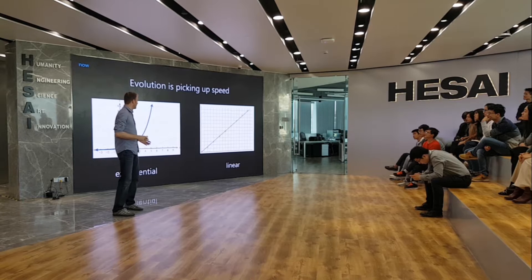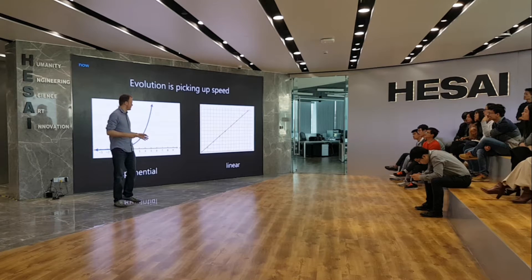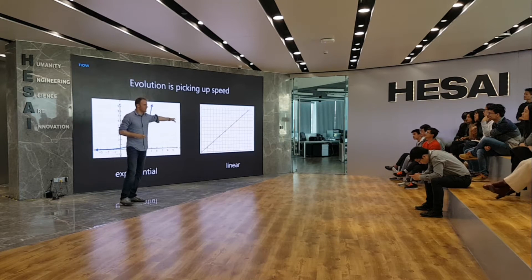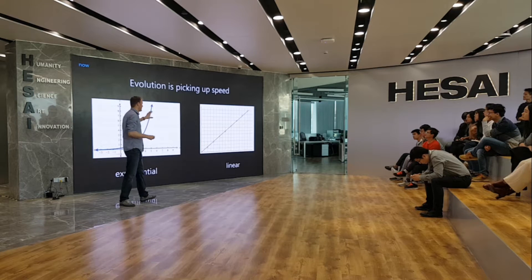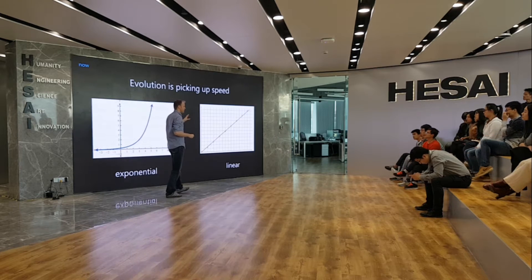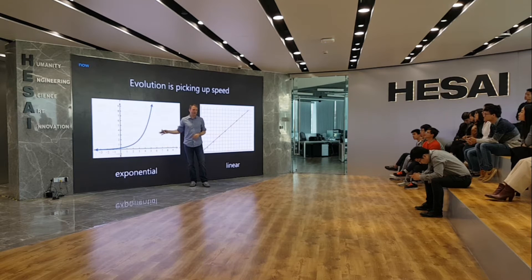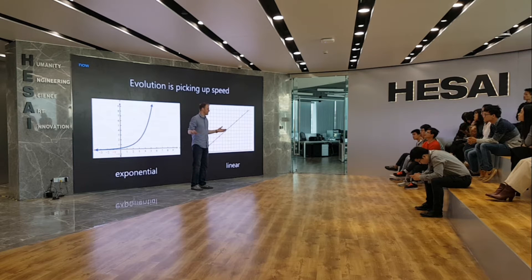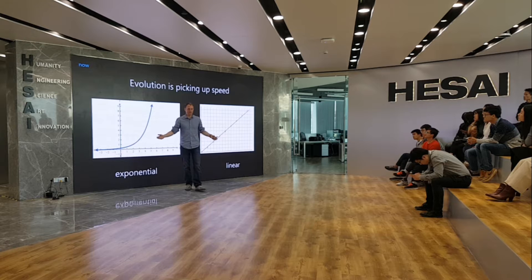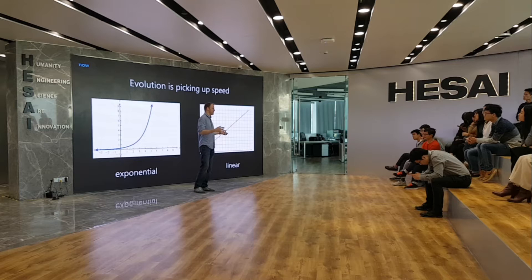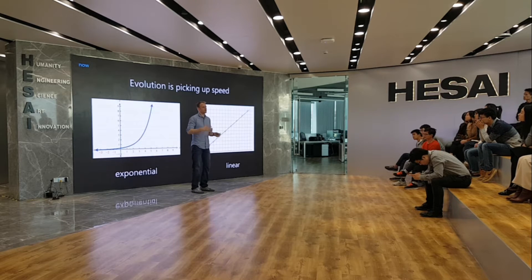We basically start with the fact that we have a big difference between exponential and linear growth. We know linear growth from the way how we humans think. We know exponential growth from how digital growth goes these days. We had to wait a couple of million years for the first technology — the wheel — to get invented. Then we had to wait a couple of thousand years for the next technology step and so on.